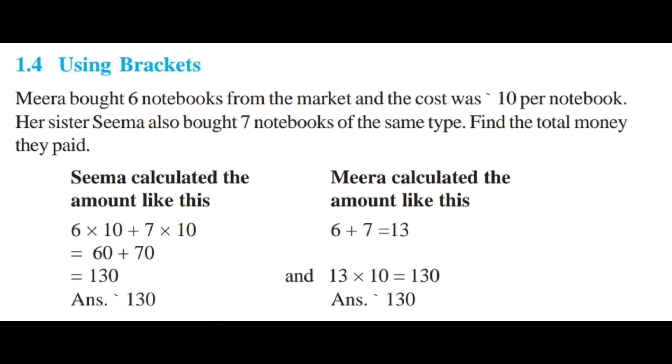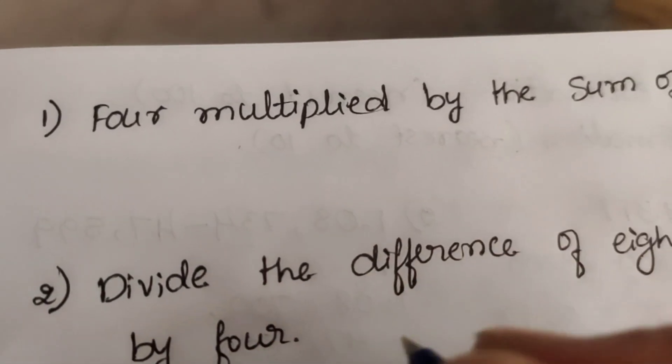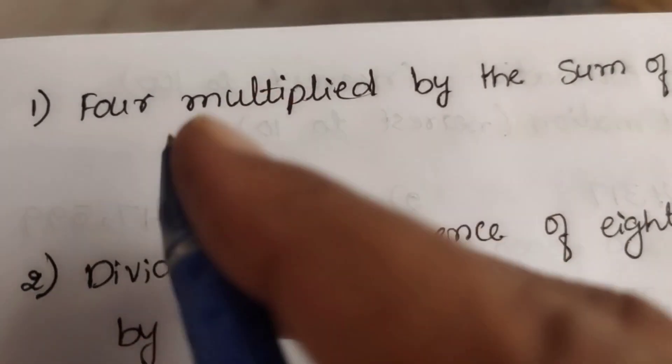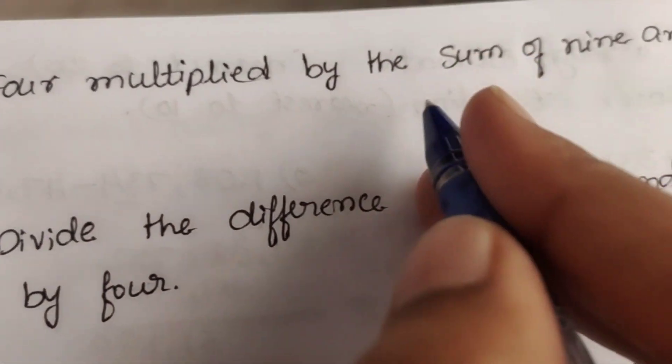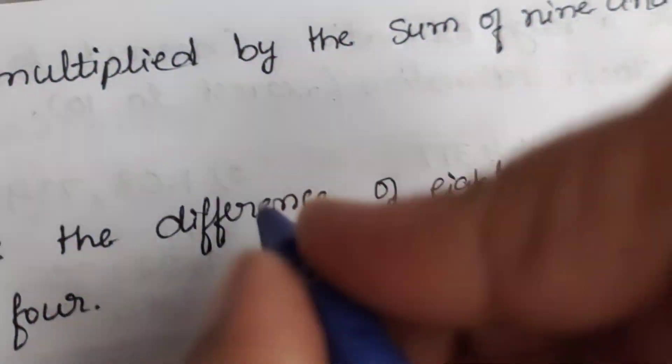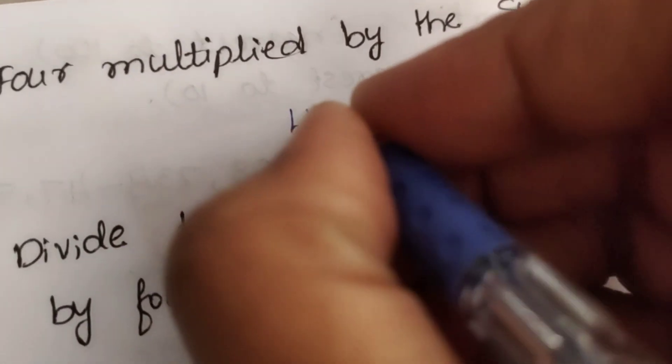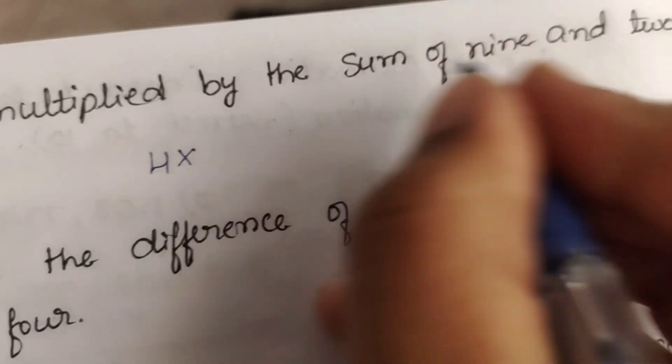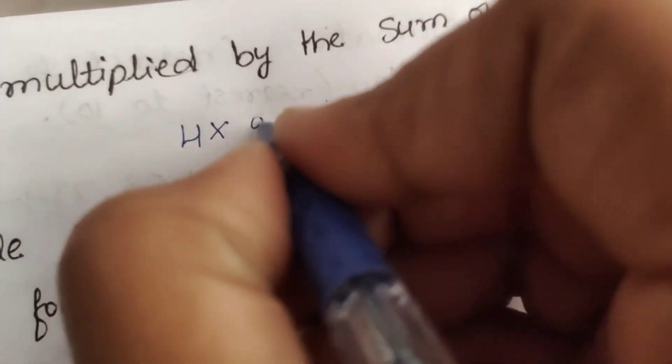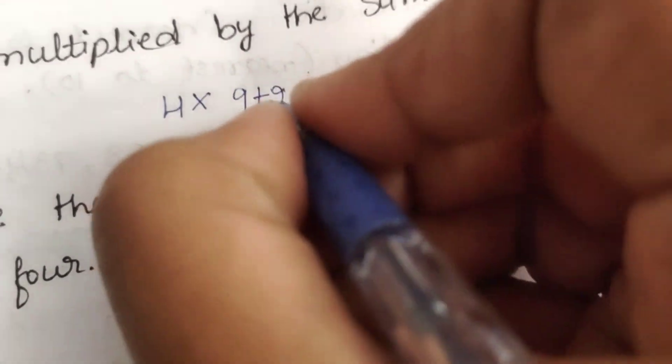Let us see some examples of how to use brackets. Expanding the brackets: 7 times the sum of 100 and 9 equals 7 times 100 plus 7 times 9. Sum of 700 and 63 is 763, so that's the answer.